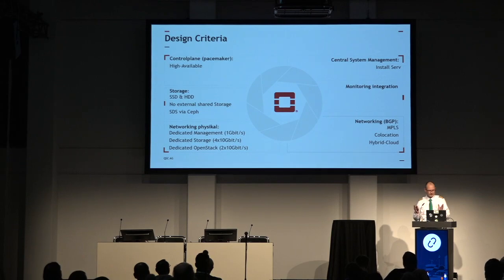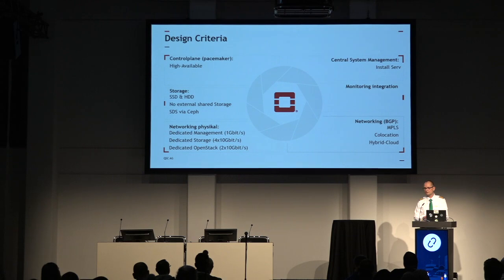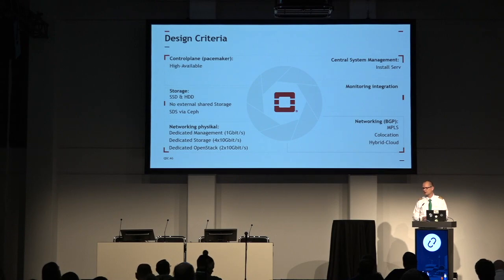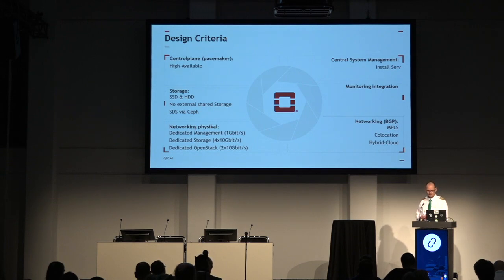We wanted a dedicated network setup, so we separated all networks: a dedicated management network, a dedicated storage network, and a dedicated OpenStack network. On the other side, we created central system management services usable for both the OpenStack part and the Ceph part. We looked at monitoring — when we started discussions with QSC, Monasca was already available but quite heavy, so we initially decided to integrate OpenStack into the already existing monitoring. During the journey we found that was not really the best decision, so this will be redesigned.